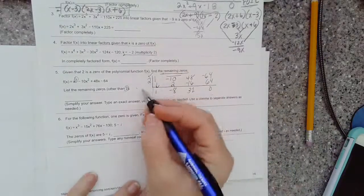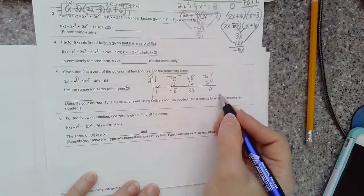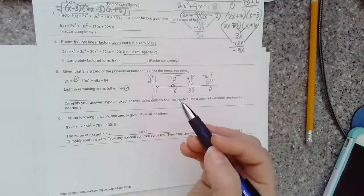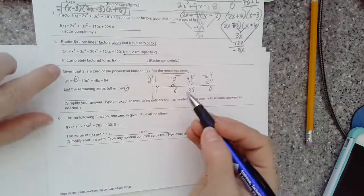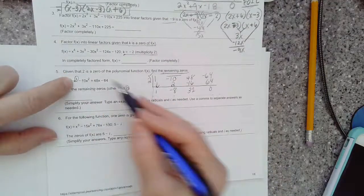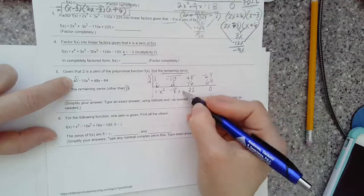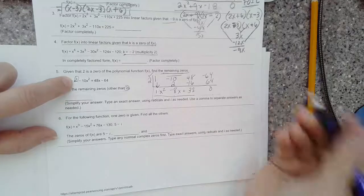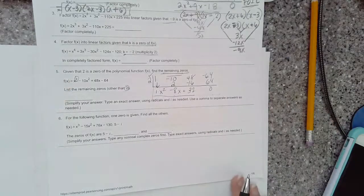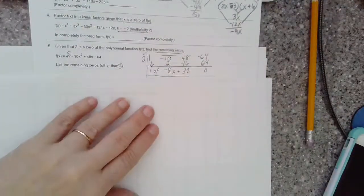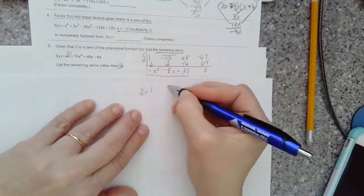This is a quadratic because when you divide x to the third by x to the first, it takes it down one degree. So this is 1x squared minus 8x plus 32 remainder 0 quadratic. I'm going to be using the quadratic formula using a equals 1, b is negative 8, and c is 32.